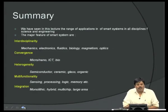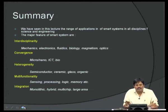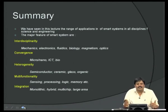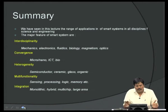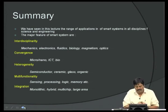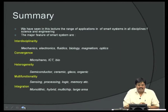In summary, smart systems have an enormous range of applications, and innovations continue to expand these possibilities. Smart systems are interdisciplinary, covering mechanics, electronics, fluidics, biology, magnetism, and optics. They involve convergence of micro, nano, ICT, and bio technologies, with heterogeneity across semiconductors, ceramics, glass, and organic materials. Multifunctionality spans sensing, logic, and memory, and integration can be monolithic, hybrid, multichip, or large area. The applications are endless.